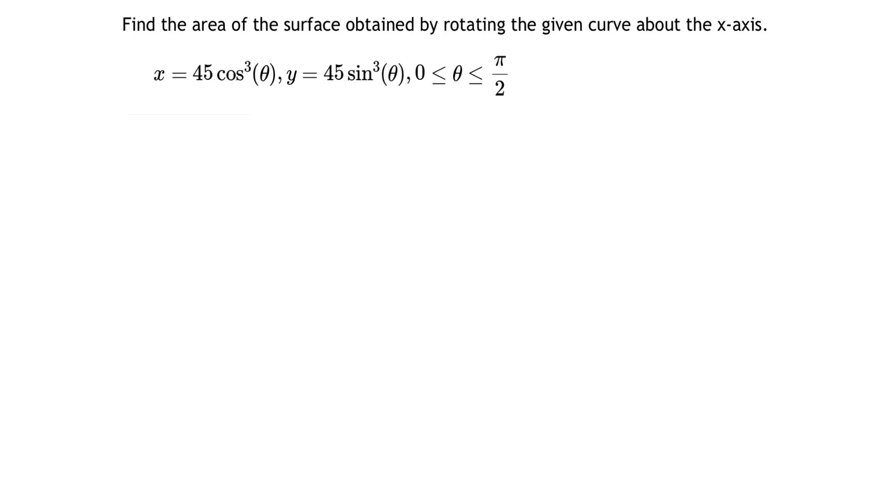Here we have a parametric curve defined by the equations x equals 45 cosine cubed of theta, y equals 45 sine cubed of theta, where theta ranges from 0 to pi over 2.